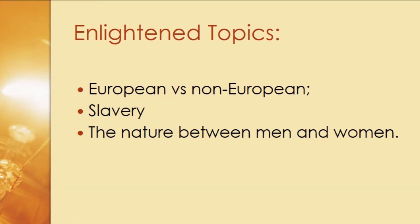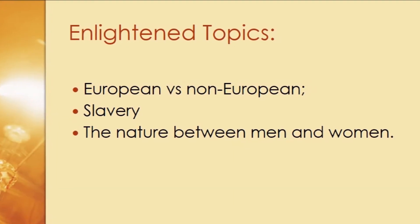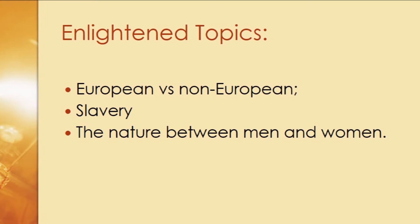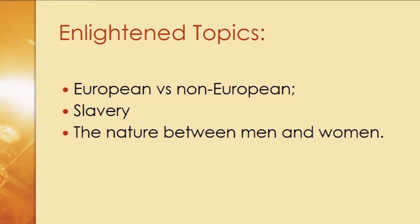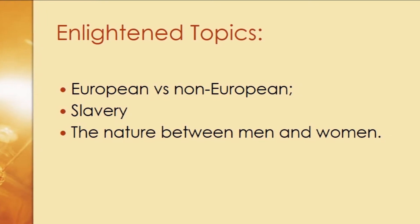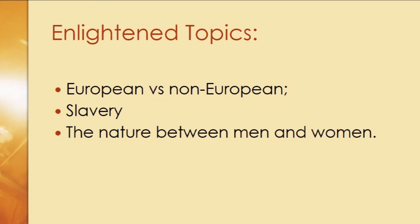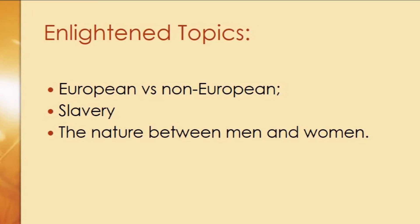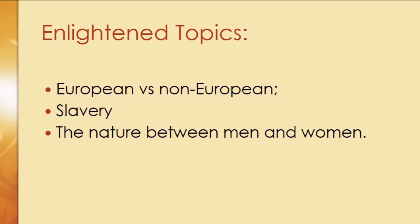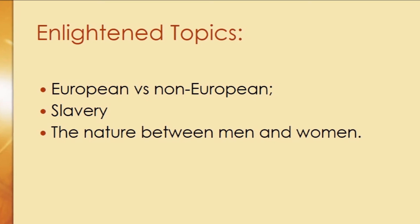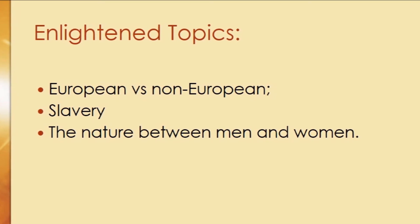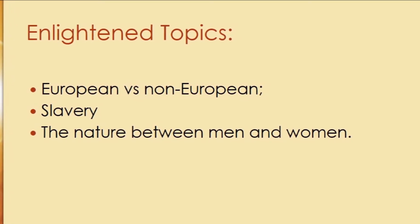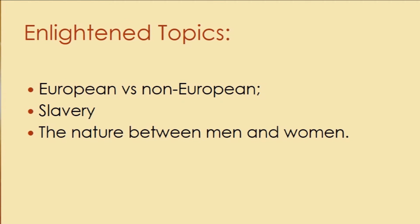The three main ideas discussed during the Enlightenment, especially in salons, were: the difference between Europeans and non-Europeans, the discussion of slavery, and the difference between men and women.